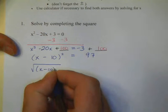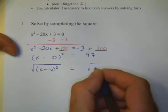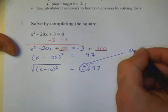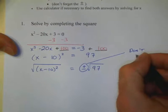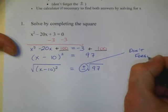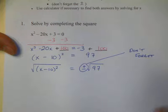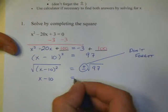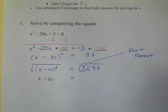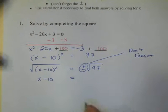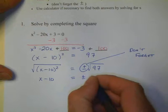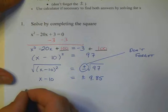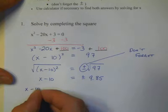The next step in our problem is going to be to take the square root of both sides. So, we take the square root of both sides, remembering that we have to have that plus or minus out there. Don't forget the plus or minus when you take the square root of both sides. The square root of something squared is merely what's inside, x minus 10, and the square root of 97 on our calculator to the nearest hundredth is plus or minus 9.85.